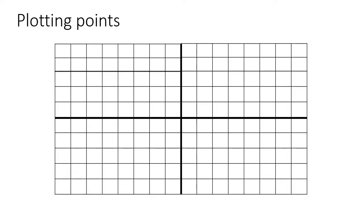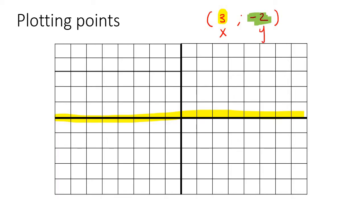Pretty much what you need to know is that if I give you coordinates, I'm always going to give you 2. So let's say for example I'll give you 3 and minus 2. Now the first one is always the x, and the x-axis is this one. The next one is y, and that's this line over here. So that's x, that's y.